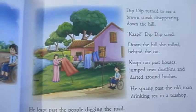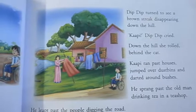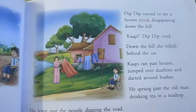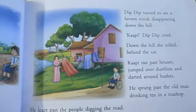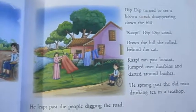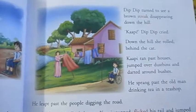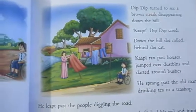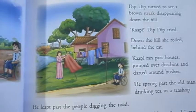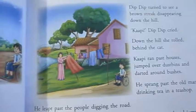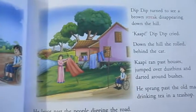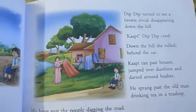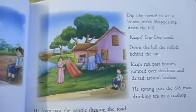Dip Dip turned to see a brown streak disappearing down the hill. Kapi, Dip Dip cried. Now what is this brown streak? Streak means a colored stripe, so a brown streak means something with a brown stripe. So Dip Dip had found Kapi and saw that Kapi was going down the hill.